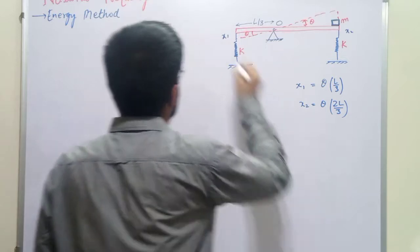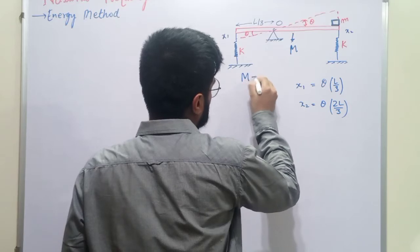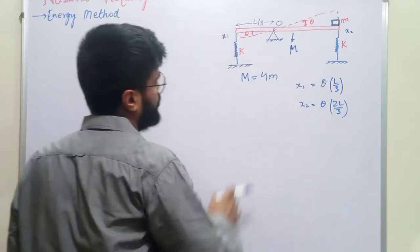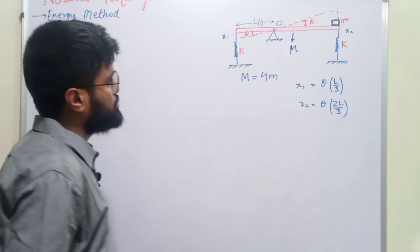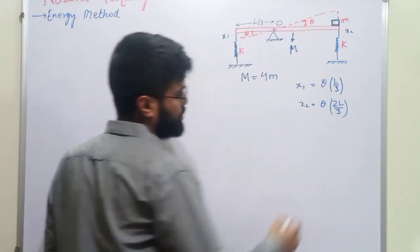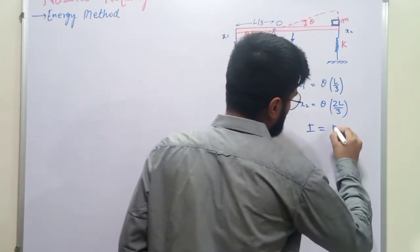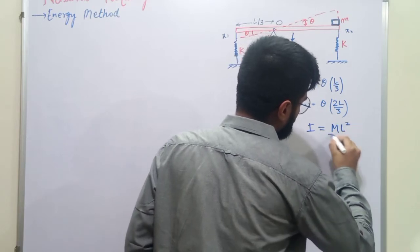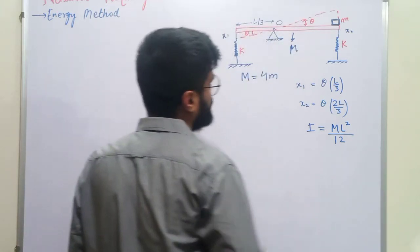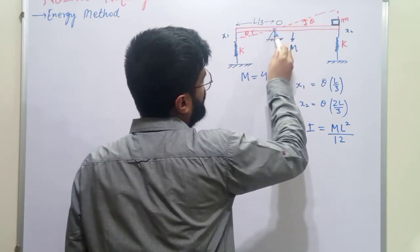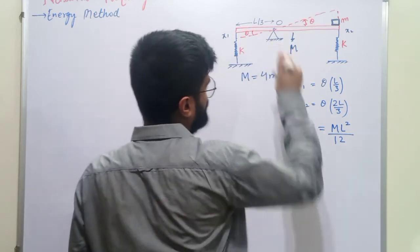In the question it is given that the mass of the rod is capital M, and capital M is equal to 4 times small m, where small m is the mass of the body placed at the end of the rod. Now, the moment of inertia for a rod about its center is ML²/12. We need to find the moment of inertia about the hinge point O.